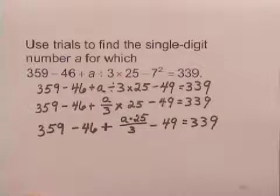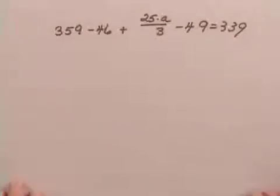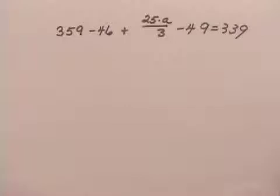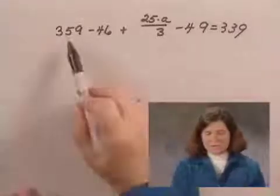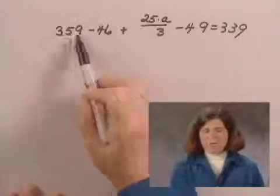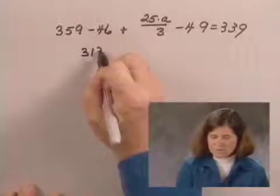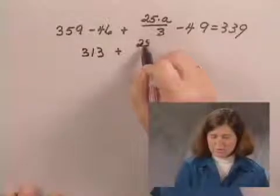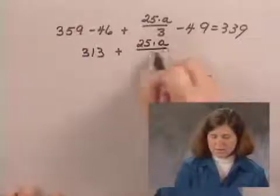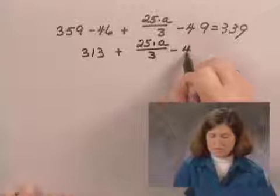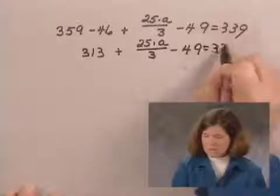Now, I'm going to continue this by performing additions and subtractions in order from left to right. I will first perform the subtraction, 359 minus 46. That is 313. Then I have plus 25 times A divided by 3 minus 49 equals 339.